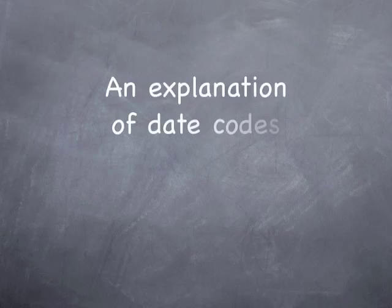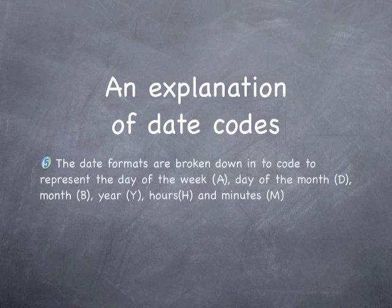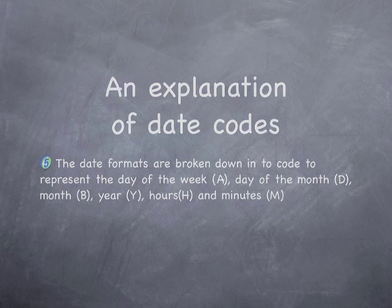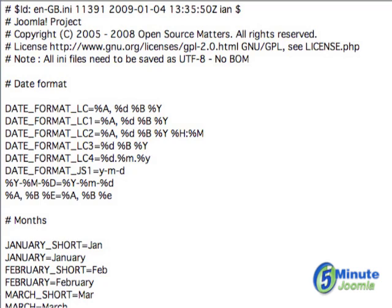Here's a brief explanation as to what all of these characters mean. A stands for the day of the week, the letter D is the day of the month and a lowercase d is a two-number abbreviation for the day of the month. B is the month and a lowercase b is a three-letter abbreviation for the month. Y equals year and a lowercase y is a two-number abbreviation for the year. H equals hours and M equals minutes.